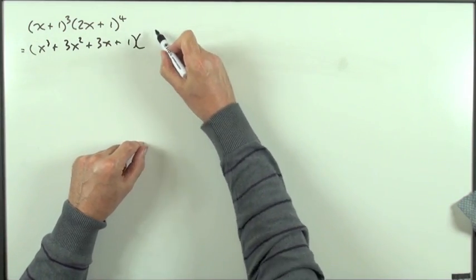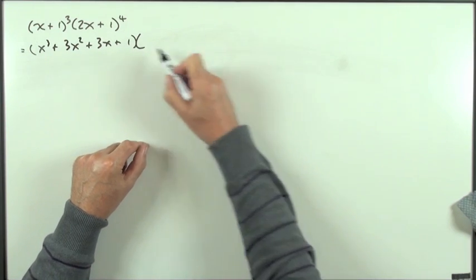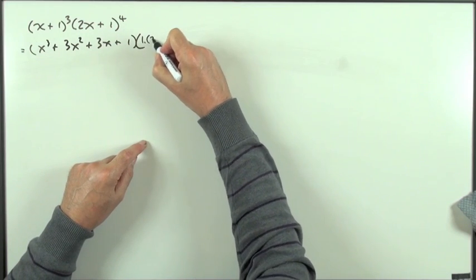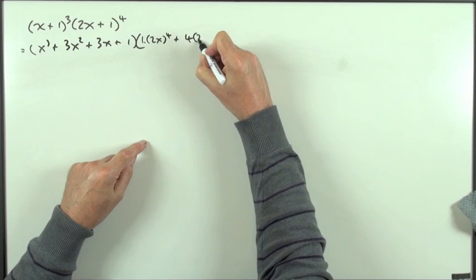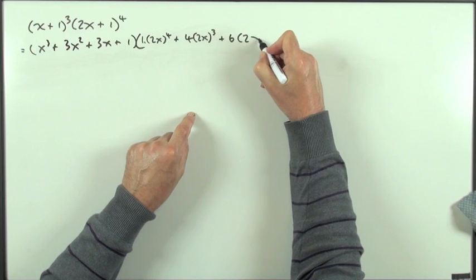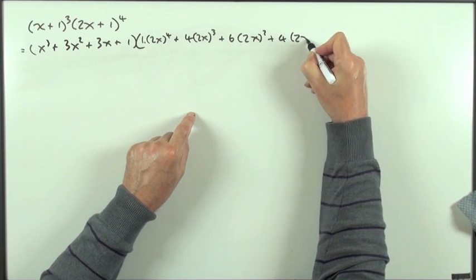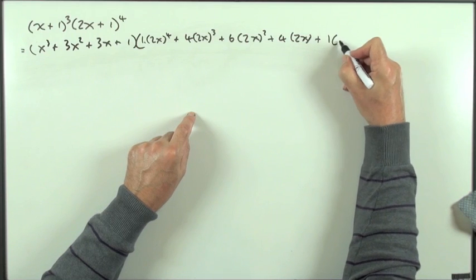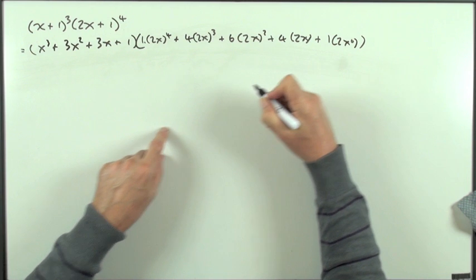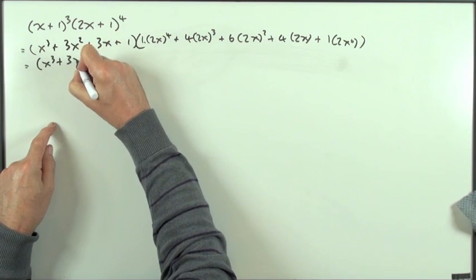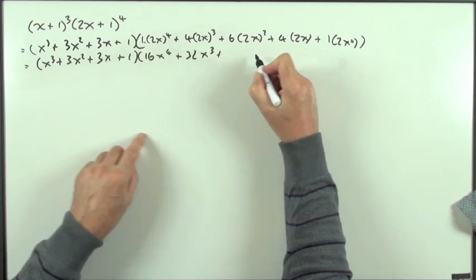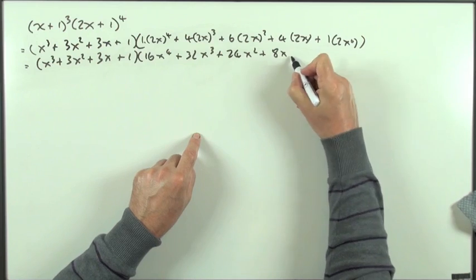That one, power 4, gives coefficients 1, 4, 6, 4, 1. That 1 will have no effect on the coefficients. So decreasing powers of 2x: that's going to be 2x to the 4, 4 times 2x to the 3, 6 times 2x squared, 4 times 2x, and finally 2x to the 0. So that's x cubed plus 3x squared plus 3x plus 1. Then 16x to the 4, 32x cubed, 24x squared, 8x, and finally 1.